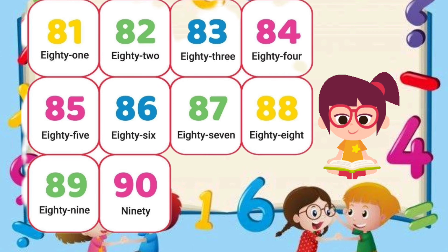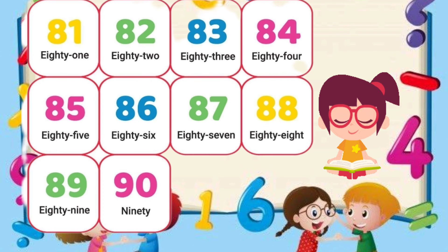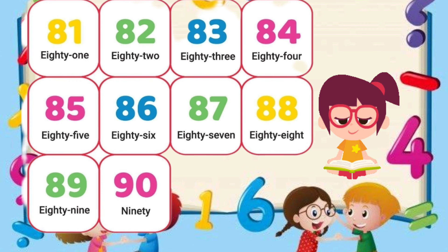86 — E-I-G-H-T-Y S-I-X. 86. 87 — E-I-G-H-T-Y S-E-V-E-N. 87. 88 — E-I-G-H-T-Y E-I-G-H-T. 88. 89 — E-I-G-H-T-Y N-I-N-E. 89. 90 — N-I-N-E-T-Y. 90.